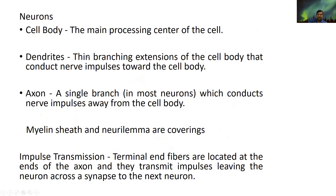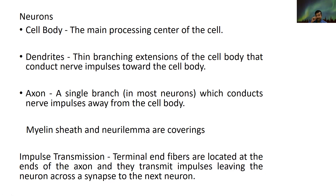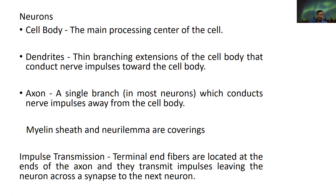The dendrites are the thin branches — they are extensions of the cell body. They conduct nerve impulses toward the cell body. Axons are single branches, extensions of the cell body, whereas axons are a single branch.